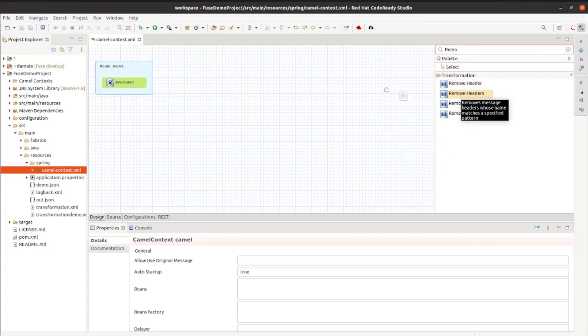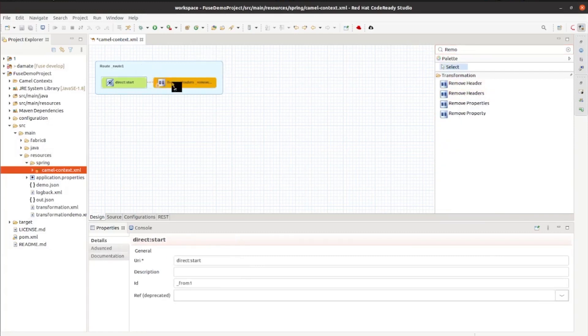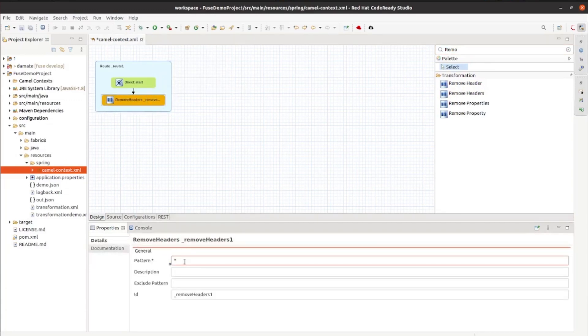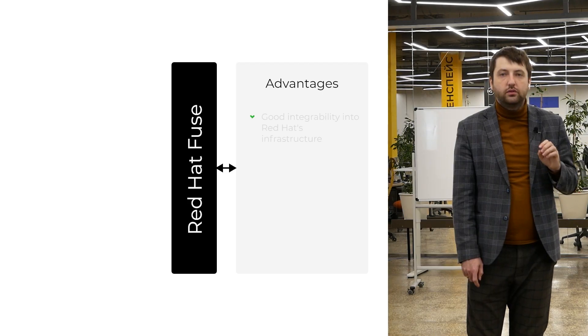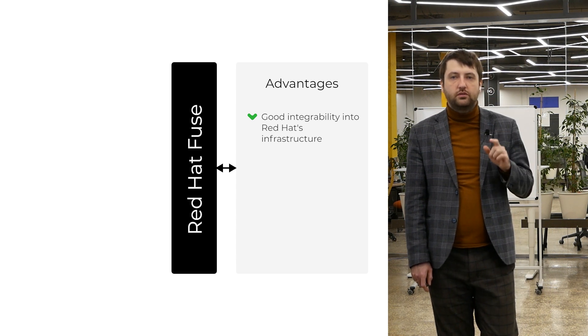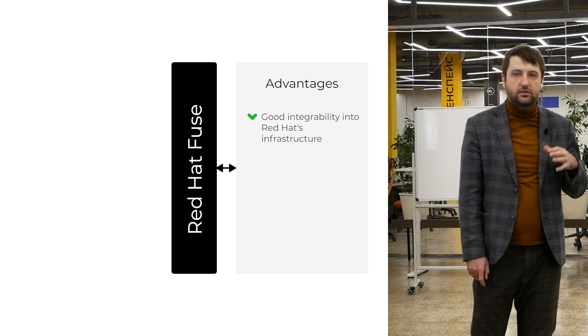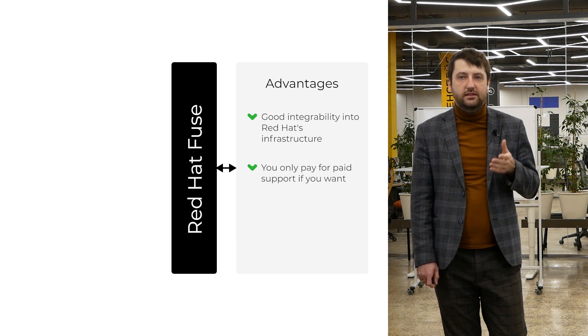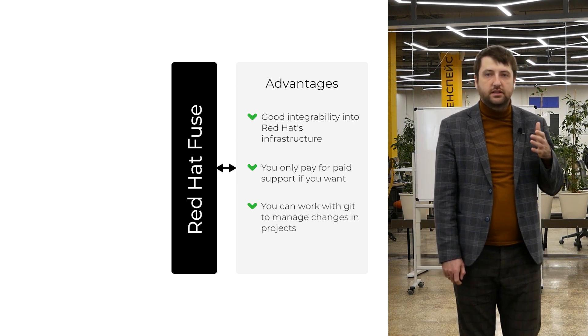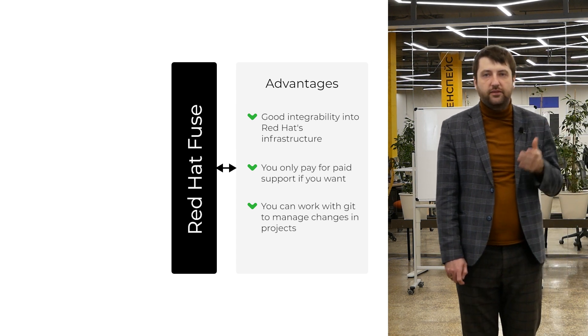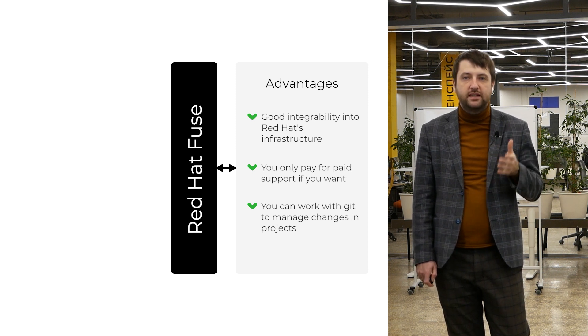Red Hat Fuse is a product by Red Hat developed on the basis of the Camel library. The first mention of the product can be found around 2008. This is the most developer-oriented product of the entire selection. On the one hand, this gives almost unlimited customization; on the other hand, the complexity of interfaces creates a high entry threshold for analysts. Advantages: good integrability into Red Hat's infrastructure — if your company uses Red Hat products, it will be easy to integrate into their ecosystem. The licensing scheme is the same for the entire product line; you only pay for support if you want. The entire project can also be viewed at the file level, which means you can work with Git to manage changes in a project.